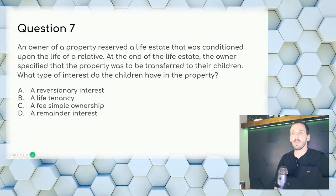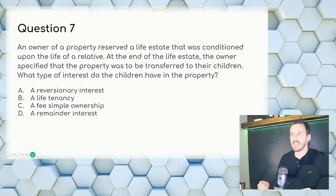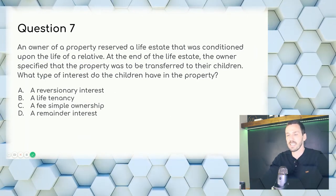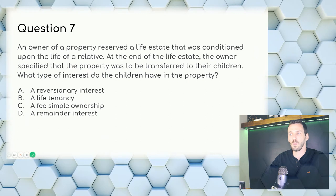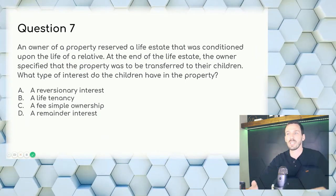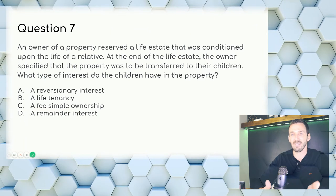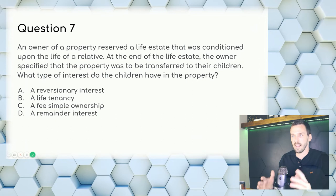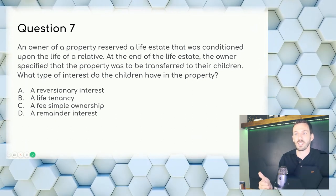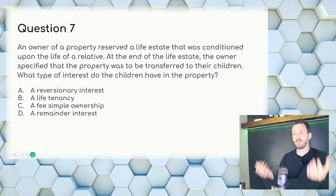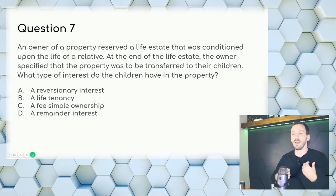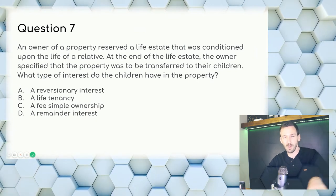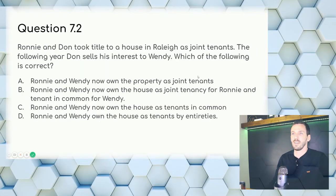Question 7: An owner reserved a life estate conditioned upon the life of a relative. At the end of the life estate, the property is to be transferred to their children. What type of interest do the children have? Reversion reverts back to the previous owner, but this says it goes to the children. Answer: D, remainder interest.